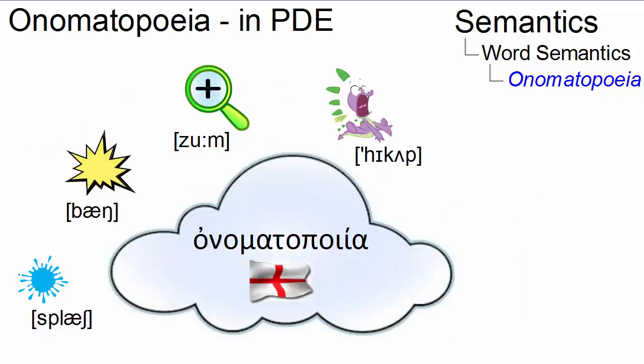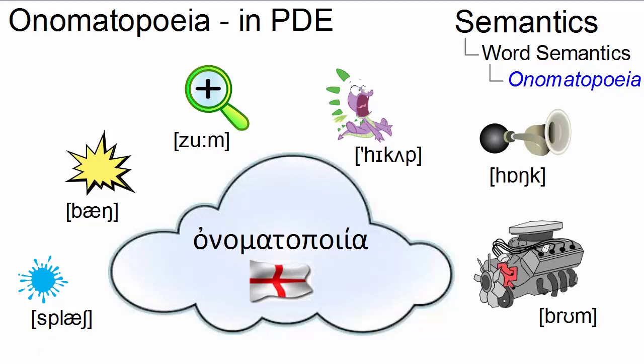Common English language examples of onomatopoeia include lexemes like 'hiccup', 'zoom', 'bang', and 'splash'. Furthermore, machines and their sounds are also often described with onomatopoietic items, as in 'honk' or 'beep-beep' for the horn of an automobile, and 'vroom' or 'brum' for the engine.